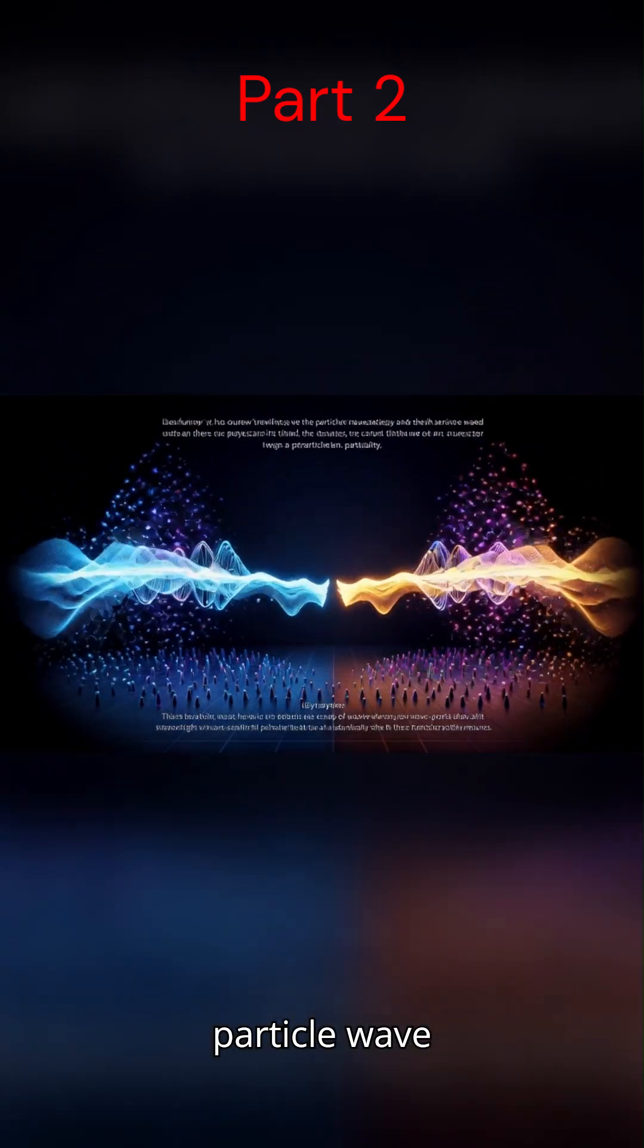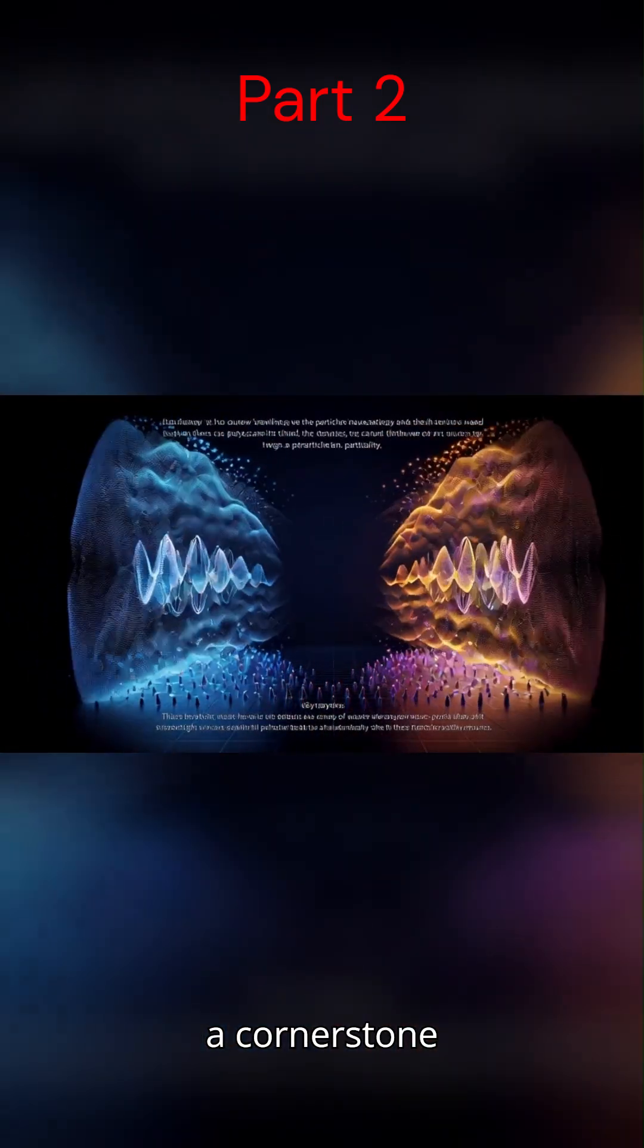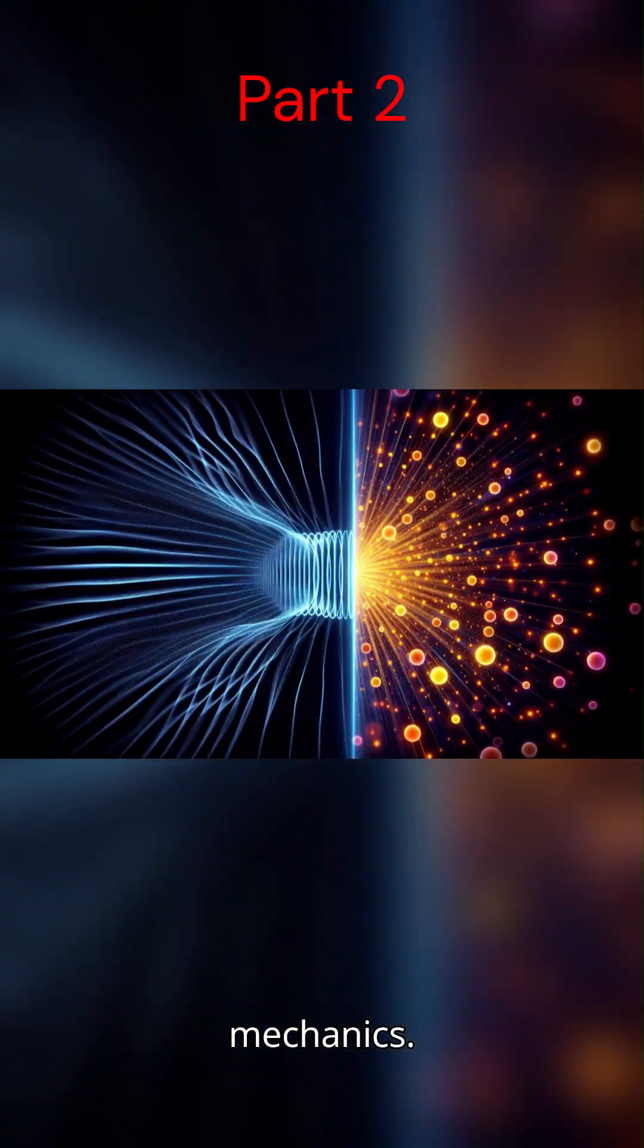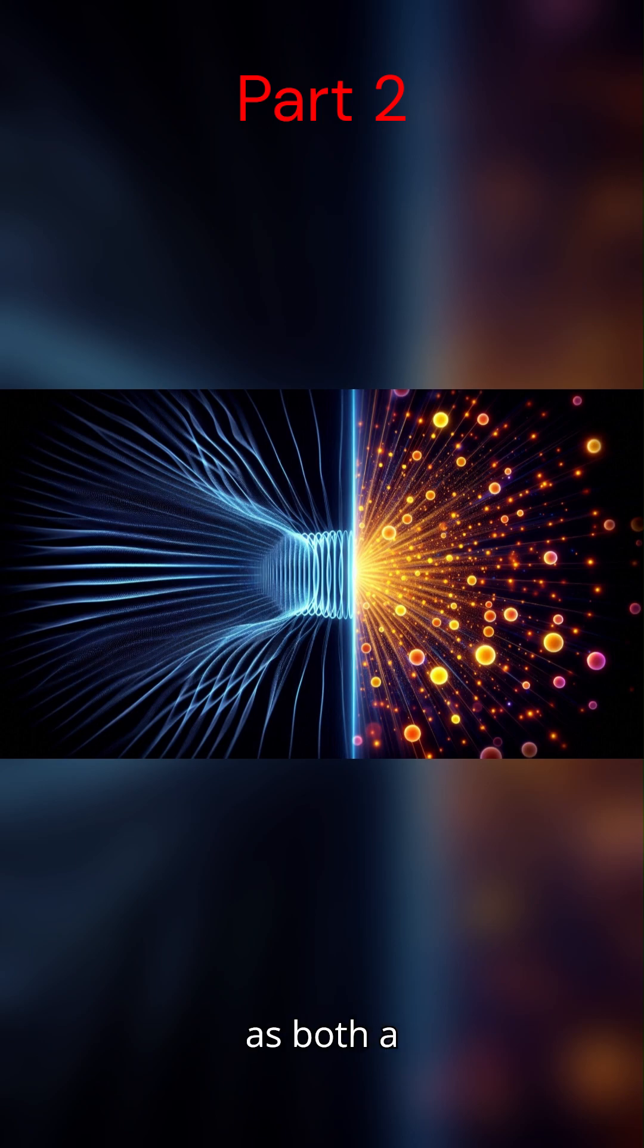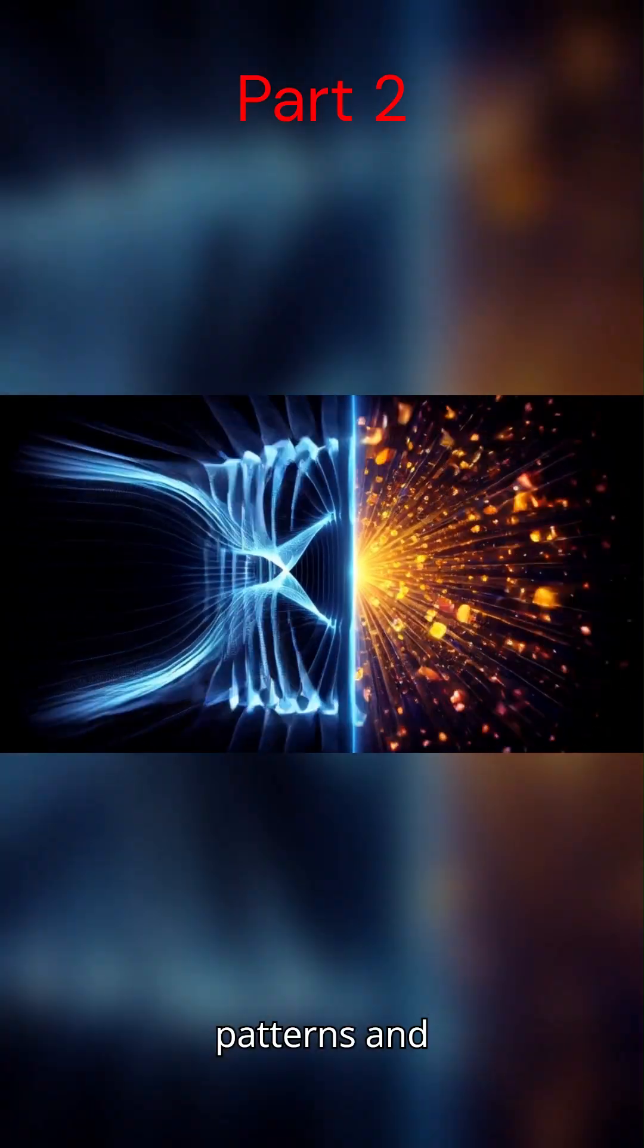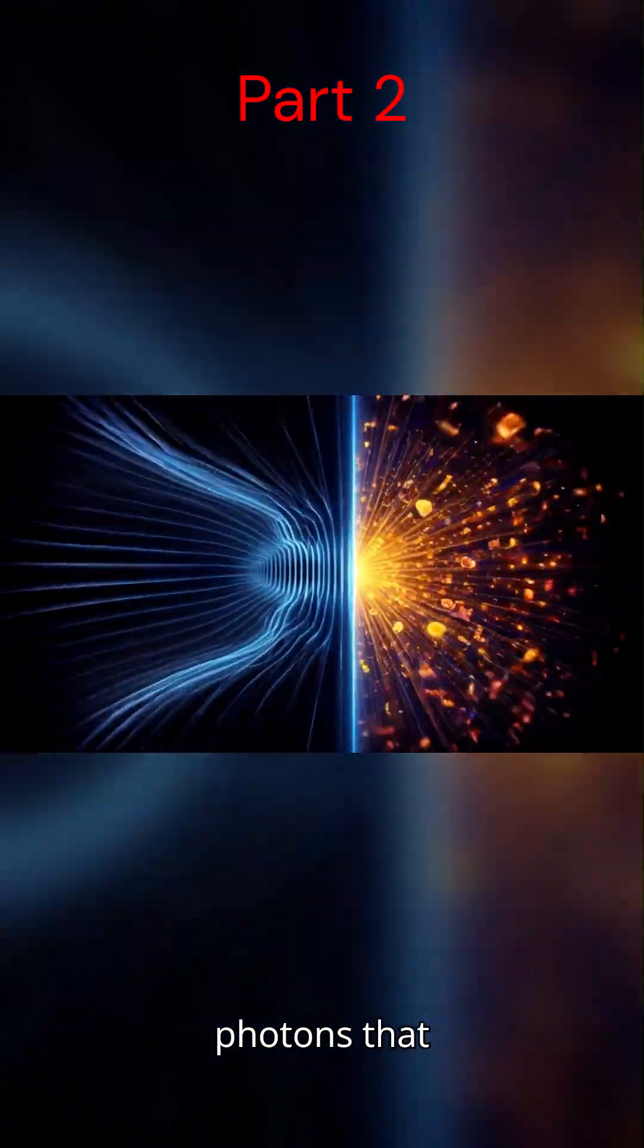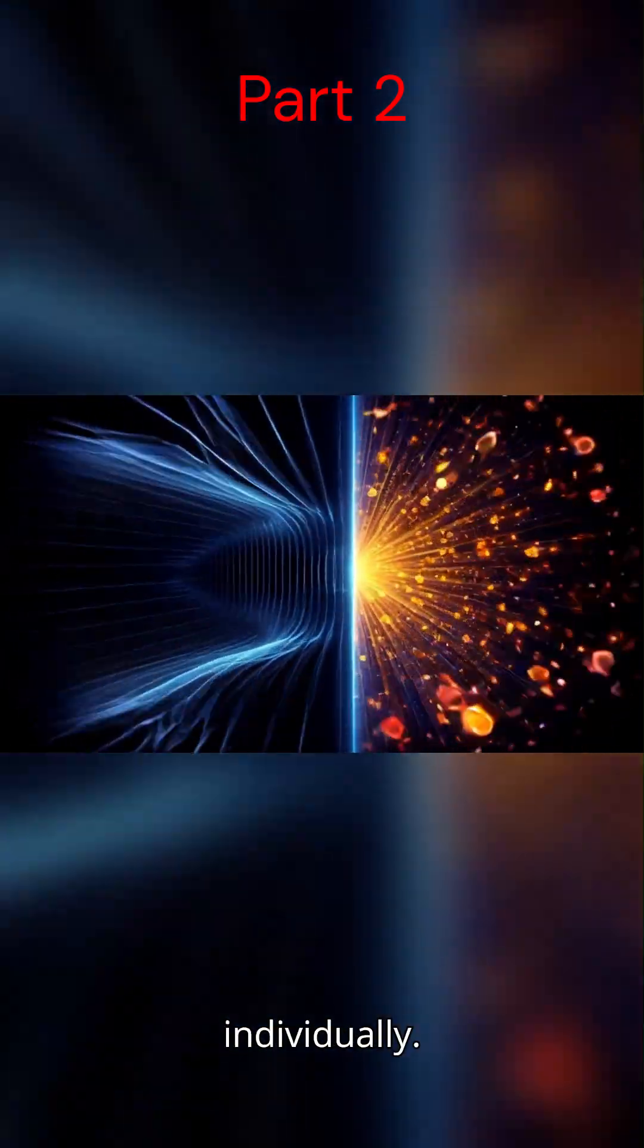This particle-wave duality became a cornerstone of quantum mechanics. Light behaves as both a continuous wave, showing interference patterns, and discrete particles—photons—that can be counted individually.